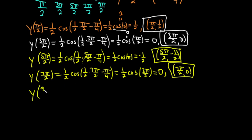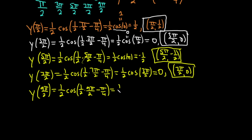For x = 9π/2: y = one-half · cos(one-half · 9π/2 − π/4) = one-half · cos(9π/4 − π/4) = one-half · cos(8π/4) = one-half · cos(2π). Cosine of 2π equals 1 — same position as angle 0 on the unit circle. So y = one-half · 1 = one-half. Fifth ordered pair: (9π/2, 1/2).